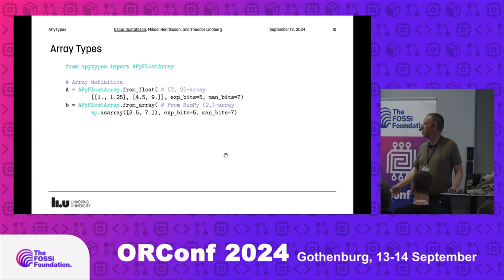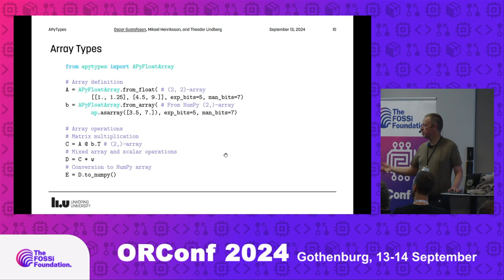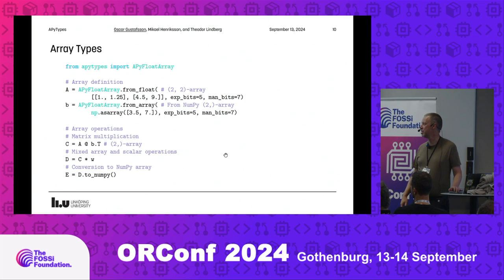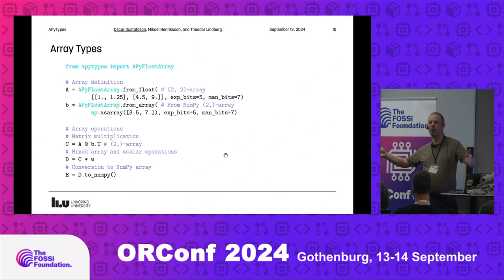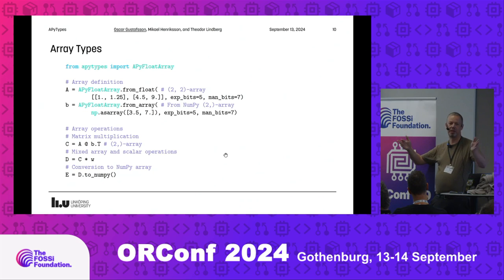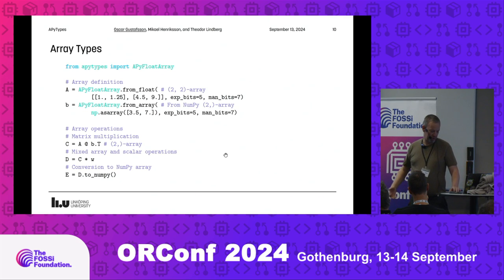We also have array types with a similar approach, including matrix multiplication — which NumPy supports but no other fixed-point library actually supported. For fixed point, when we add up 100 numbers we don't get 100 extra bits; we get about seven extra bits because we guarantee the result fits. So we select the minimum word length that guarantees correctness.